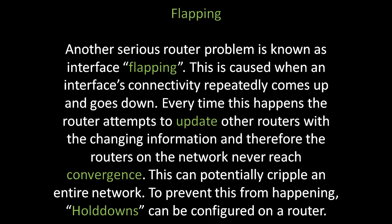Another serious router problem is known as interface flapping. This is caused when an interface's connectivity repeatedly comes up and goes down. Every time this happens, the router attempts to update other routers with the changing information, and therefore the routers on the network never reach convergence. This can potentially cripple an entire network.